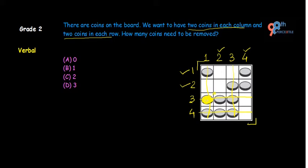Now let us check again. In the first row we have 2 coins, in the second row 2 coins, and in the third row 2 coins. But the fourth row still has 3 coins. Checking the columns: the first column now has 2 coins, the second already had 2, and the fourth already had 2. We can see that the third column and the fourth row both still have 3 coins each. This coin lies at their intersection — it is common to both the third column and the fourth row. So let us remove this coin.